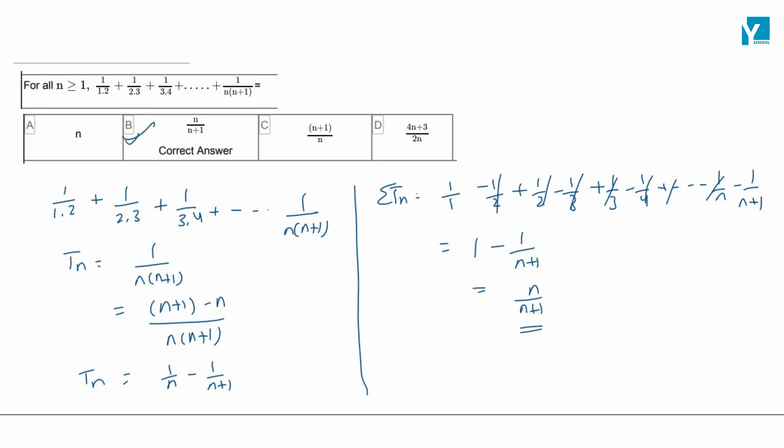Now for n, for all n greater than or equal to 1, you can also prove this by PMI. For n equal to 1, the statement is true. For n equal to 1, 1 upon 2 is what we're getting. Now for n equal to k, you assume this is true, and then you will prove it for n equal to k plus 1. Option B is the right answer.